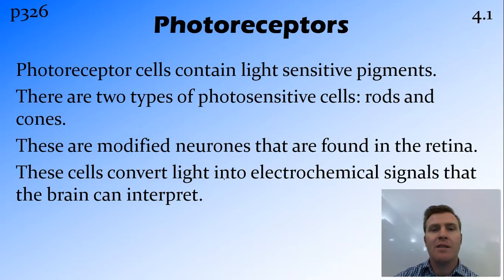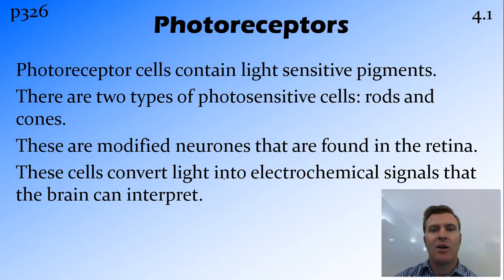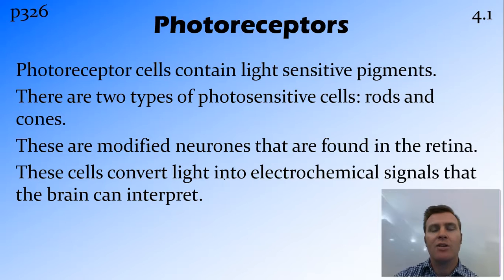Photoreceptors are receptors — modified neurons that pick up photo or light, and then take that as an electrochemical signal to the brain. We have two categories of these photosensitive receptors: the rods and the cones.